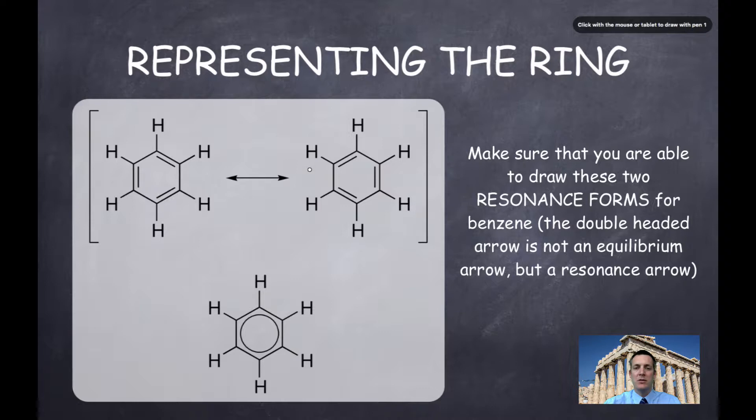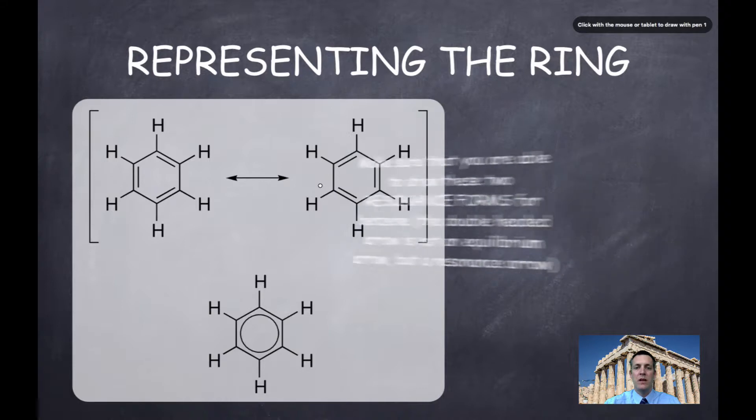So either we could have these three pairs of carbon atoms joined by double bonds, or those three pairs of carbon atoms. It doesn't really matter which one. And what resonance forms are not really aiming to do is to show that the molecule is either one or the other, or spending some time as one and some time as the other, just that there are different ways of us drawing it. And perhaps somewhere in between these two is where the truth lies.